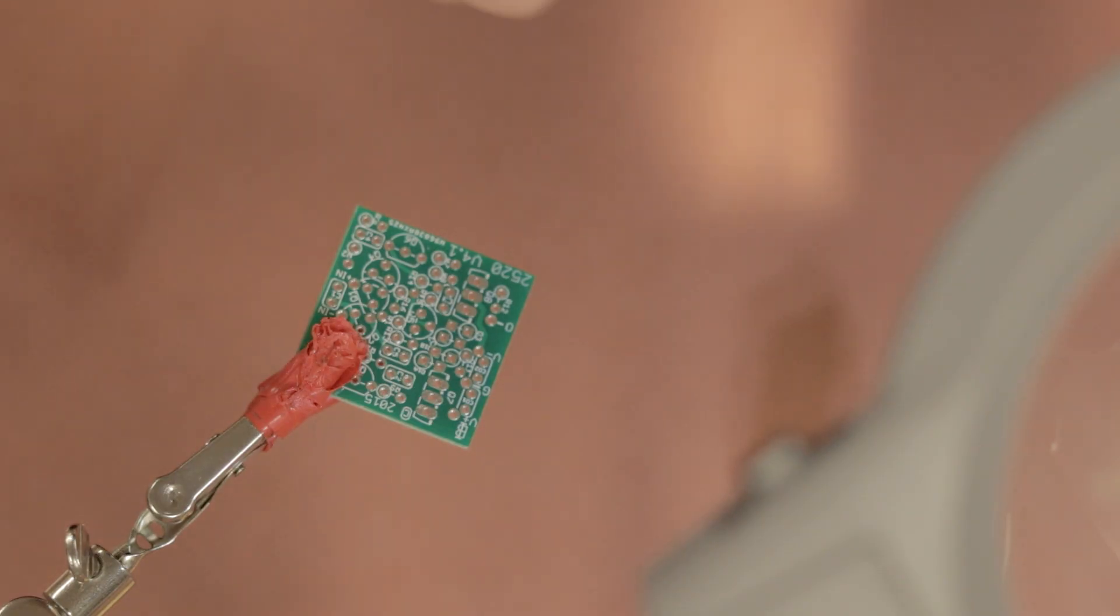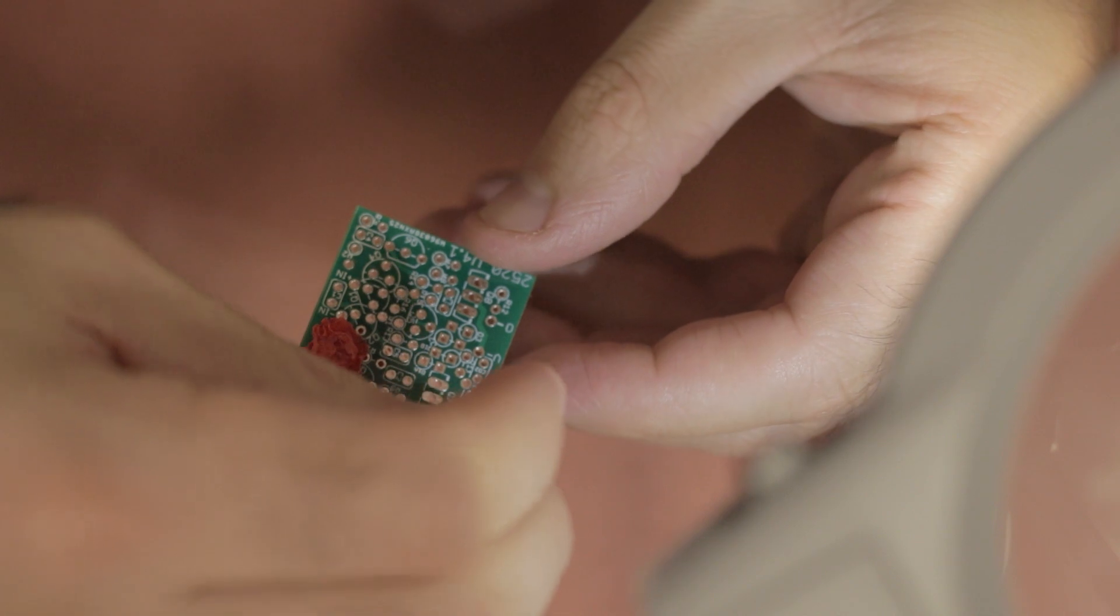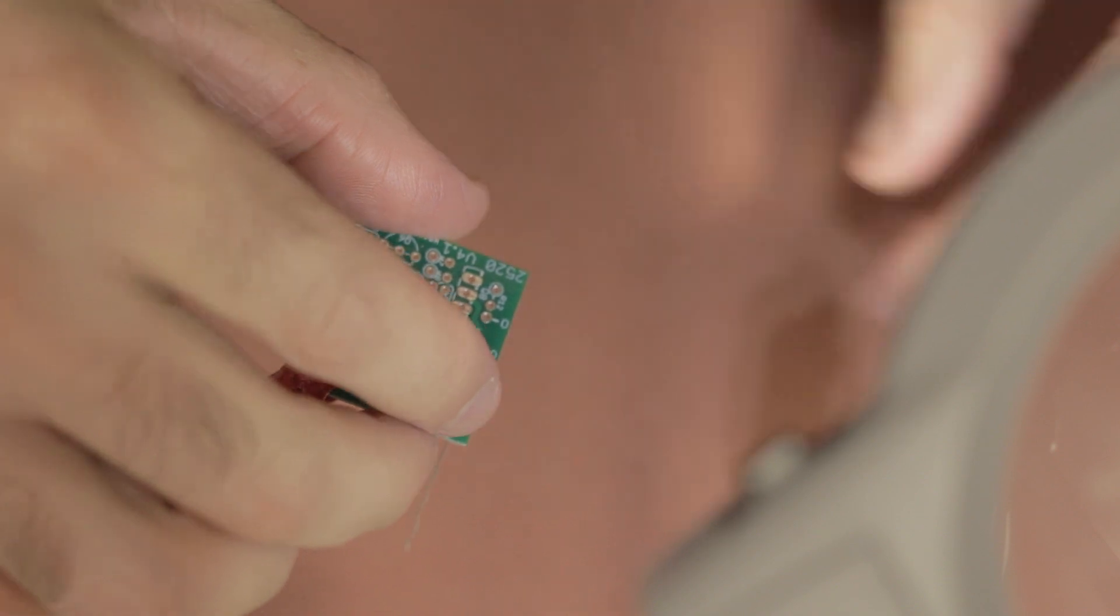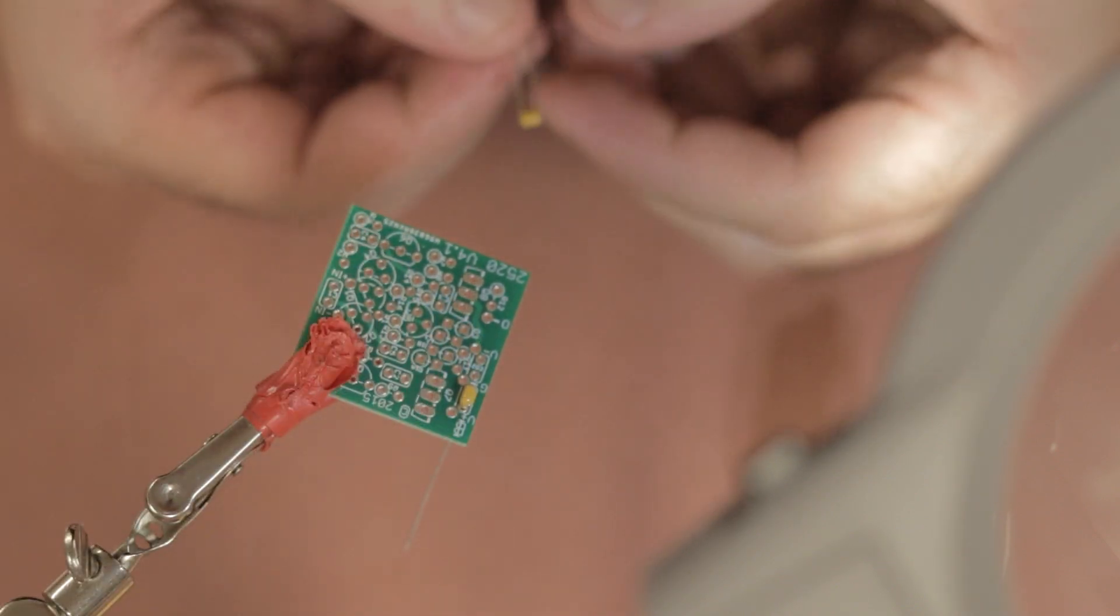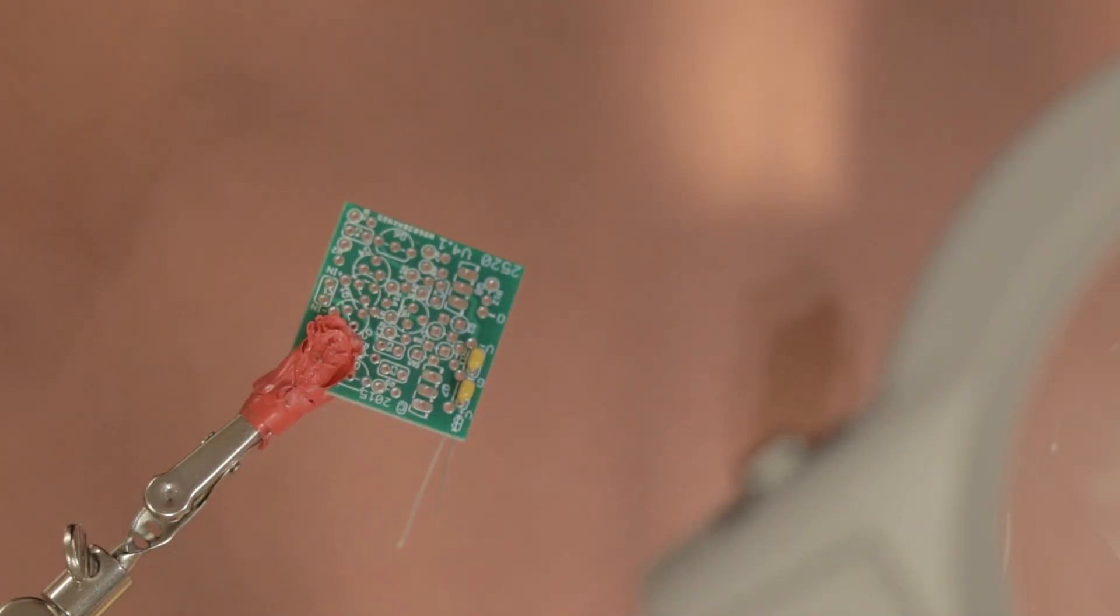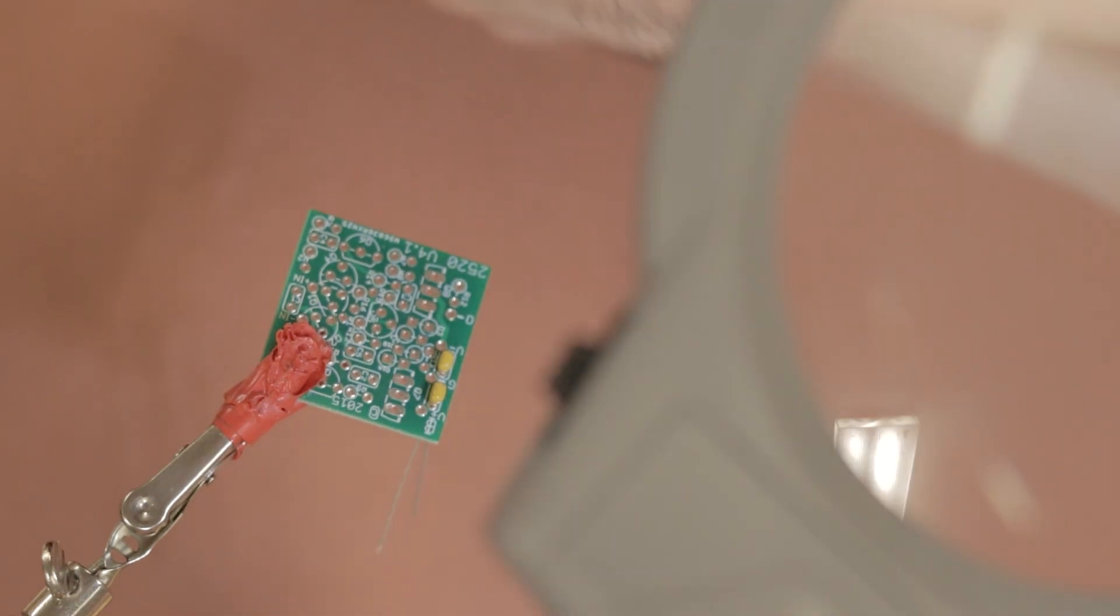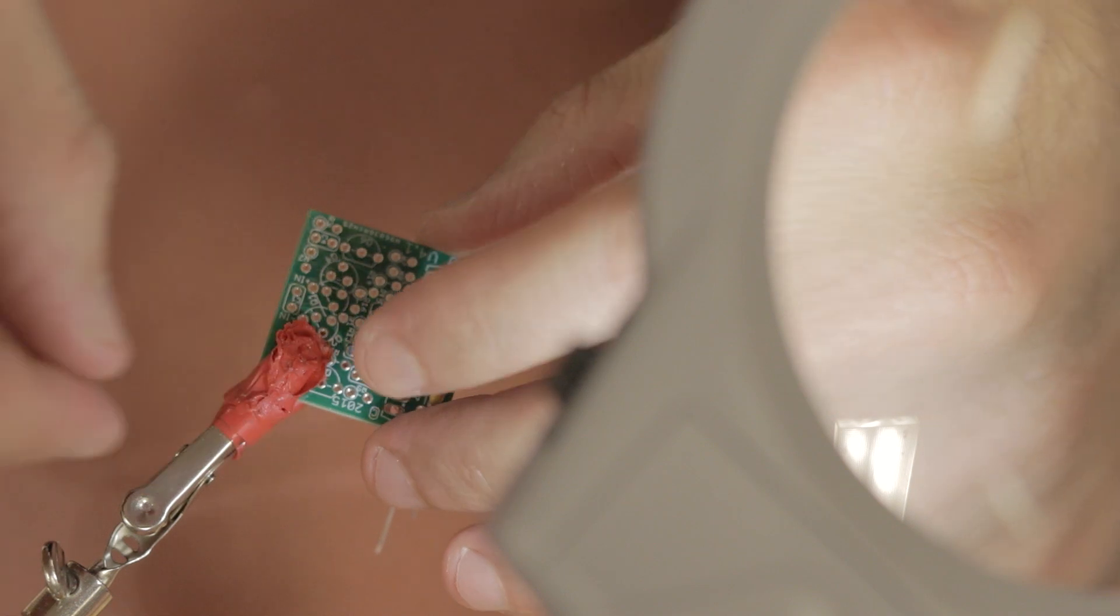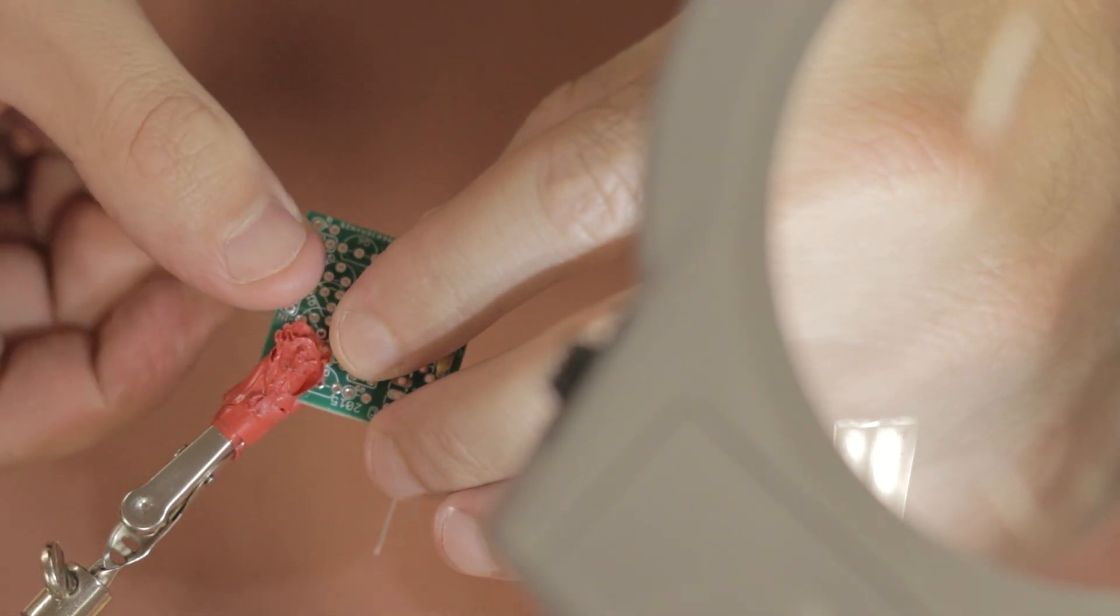So the first ones you want to place are these little yellow capacitors. There's only two of them, and they're both the same value, and they go in at CD1 and CD2. Then there are these five blue capacitors. They also need to go in on the board, and they all have different values, so you'll definitely want to use a magnifying glass to check these values and make sure that you're inserting them in the right parts of the PCB board. They go on C1, C2, C3, C4, and C5.